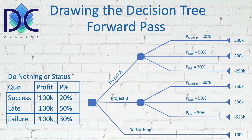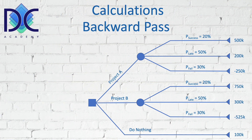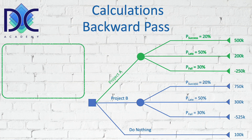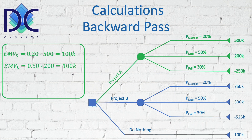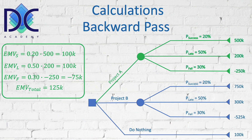Now we perform the backward pass — the calculations. For Do Nothing the expected monetary value is simply 100k. For Project A: the EMV in case of success is 0.2 × 500 = 100k; in case of late is 0.5 × 200 = 100k; and in case of failure is 0.3 × (−250) = −75k. Adding these together gives a total expected monetary value of 125k, which we add to the Project A branch.